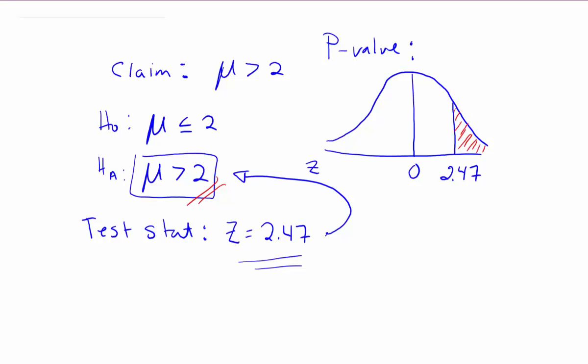Basically, when you have a right tail test, the p-value is the area to the right of the test stat. If you had a left tail test, it'd be the area to the left of the test stat, and if you had a two tail test, you'd find this tail area that we have shaded here and you would double it for the two tails.